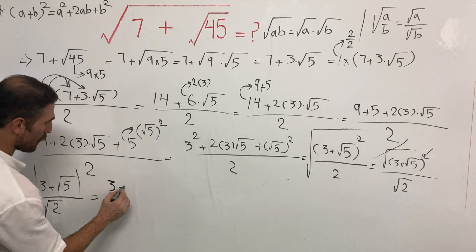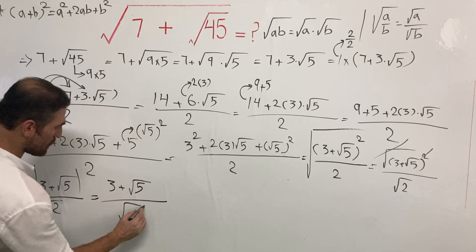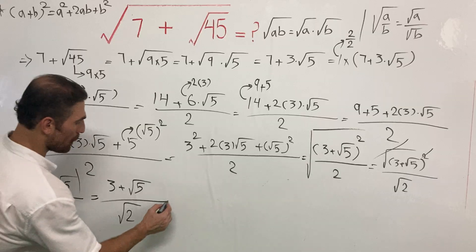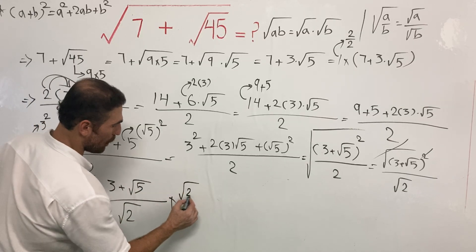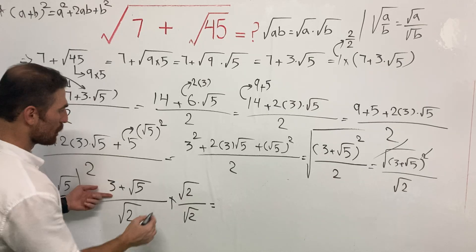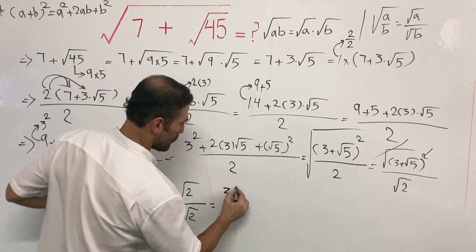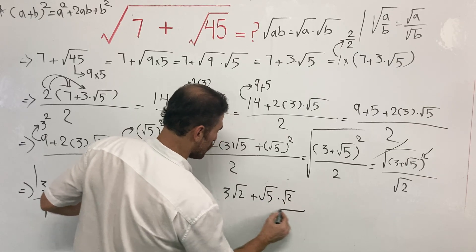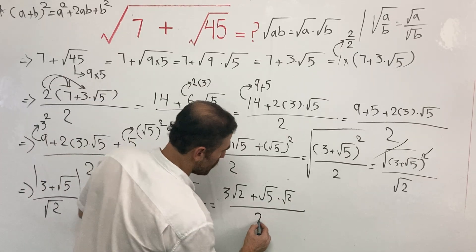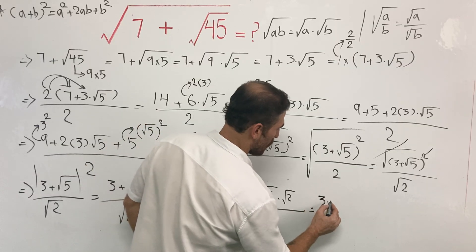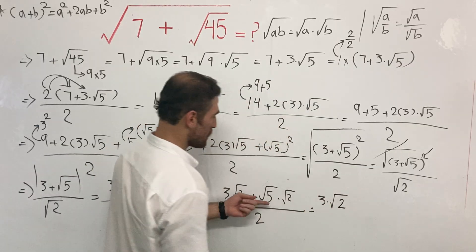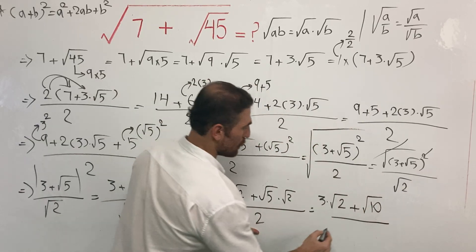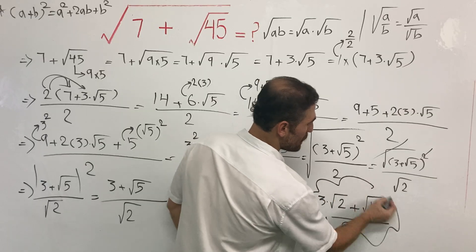So we have three plus the square root of five, over the square root of two. To simplify further, we multiply both the top and the bottom by the square root of two. That gives us three times the square root of two plus the square root of five times the square root of two, over the square root of two times the square root of two. The square root of two times the square root of two equals two, and the square root of five times the square root of two equals the square root of ten. So the final answer is three times the square root of two plus the square root of ten, all over two. This is the most simplified answer.